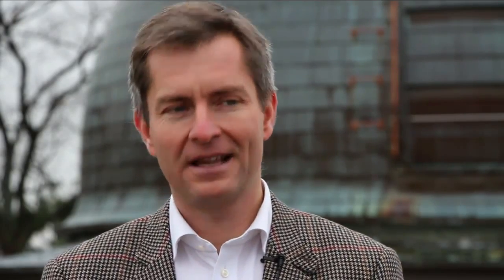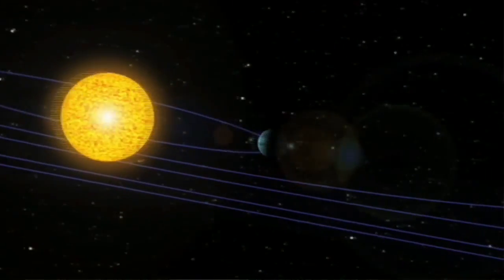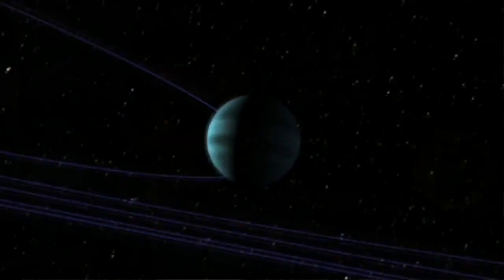What we want now are smaller planets, planets that are perhaps more like the Earth, and planets that pass in front of very close stars, the very closest stars for which we can find those planets, because they're going to be the easiest ones to study.